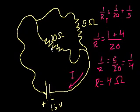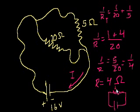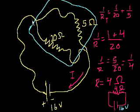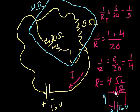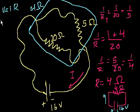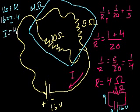We can redraw this circuit as simply a 4-ohm resistor with a 16-volt battery. Using Ohm's Law — V equals IR — 16 volts equals the current times 4 ohms. So the current equals 16 divided by 4, which equals 4 amps.